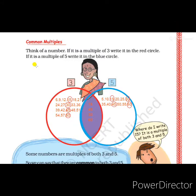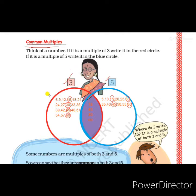Hello students, we are continuing our chapter 6 on factors and multiples. Today I will explain page number 91. The first heading is 'Common Multiples.' The activity says: think of a number — if it is a multiple of 3, write it in the red circle; if it is a multiple of 5, write it in the blue circle. We have to write the multiples of 3 in the red circle and multiples of 5 in the blue circle.